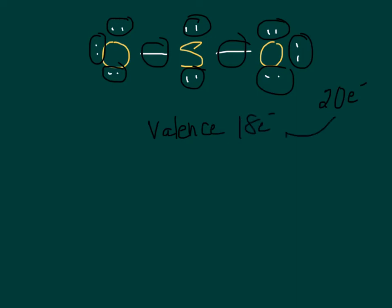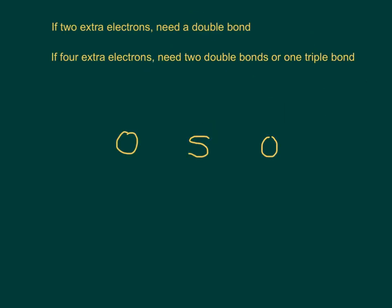If these two numbers are the same, and oftentimes they will be, that means your structure was correct. But when they're different like this, it means your structure isn't correct and that you needed a double or triple bond somewhere. If you have two extra electrons like we did - we had twenty when we were only supposed to have eighteen - it means we needed a double bond. If you have four extra, then you either need two double bonds or a triple bond.